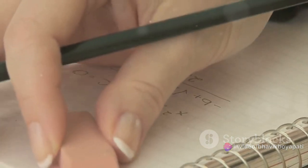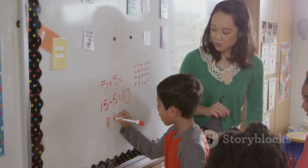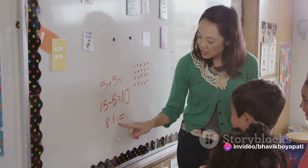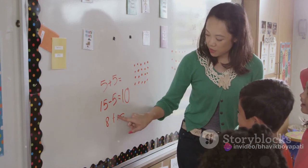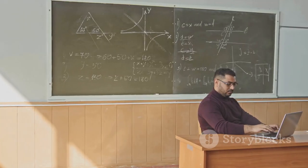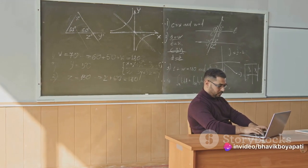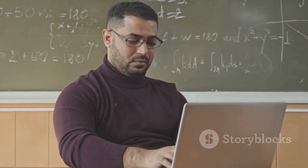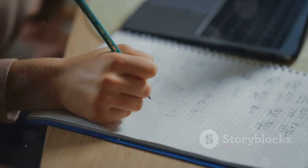Let's try another example for clarity. If 75% of a number is 150, what's the number? Again, we set up our equation: 0.75x equals 150. Solving for x, we find x equals 150 divided by 0.75, which equals 200. These examples show us that to find a missing number from a given percentage, we need to divide the known result by the percentage expressed as a decimal. This is the key to unlocking any percentage problem where the original number is unknown.